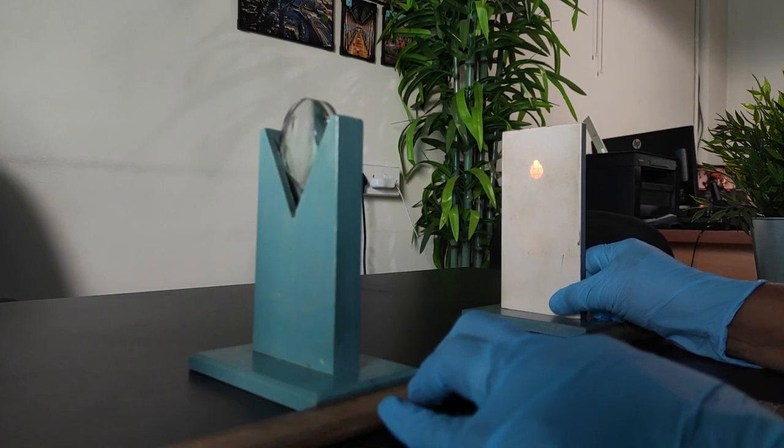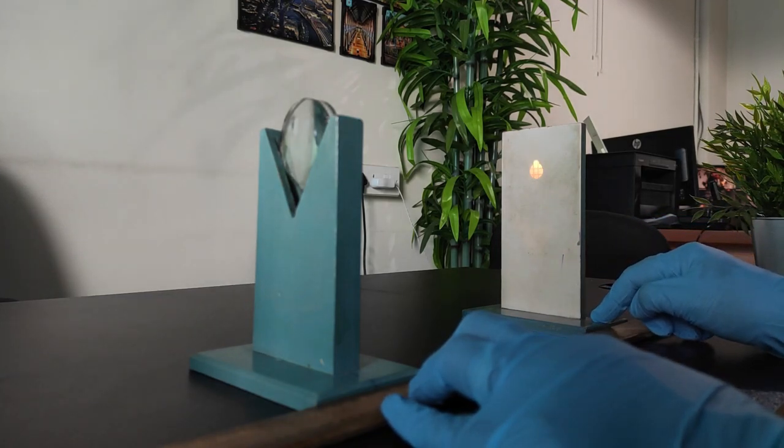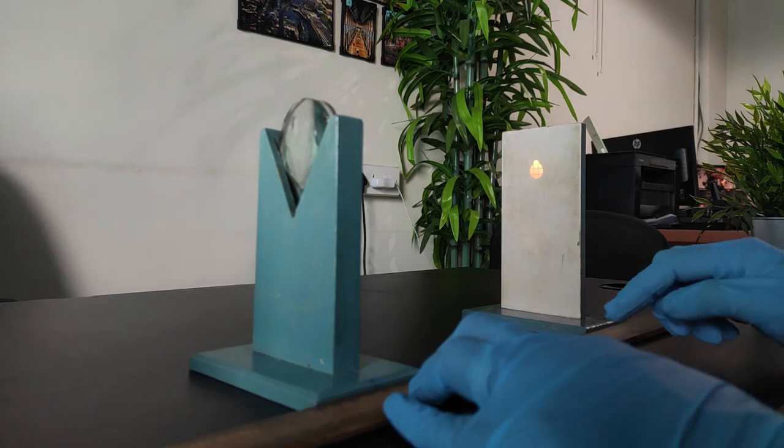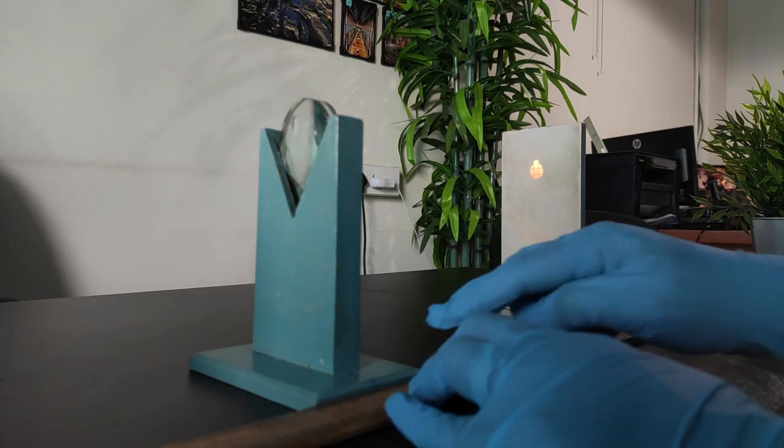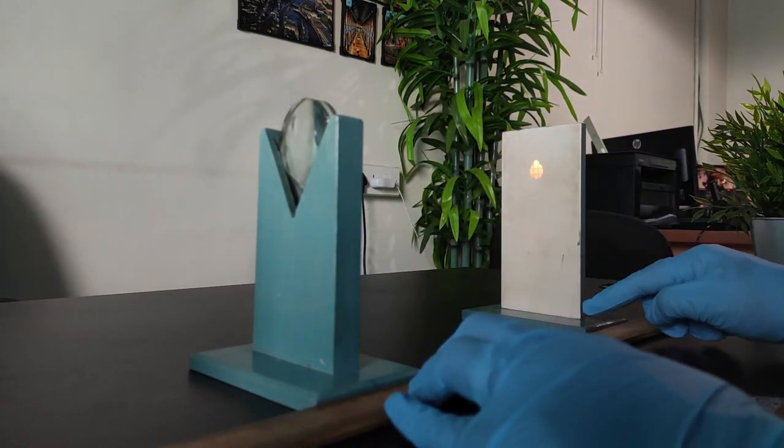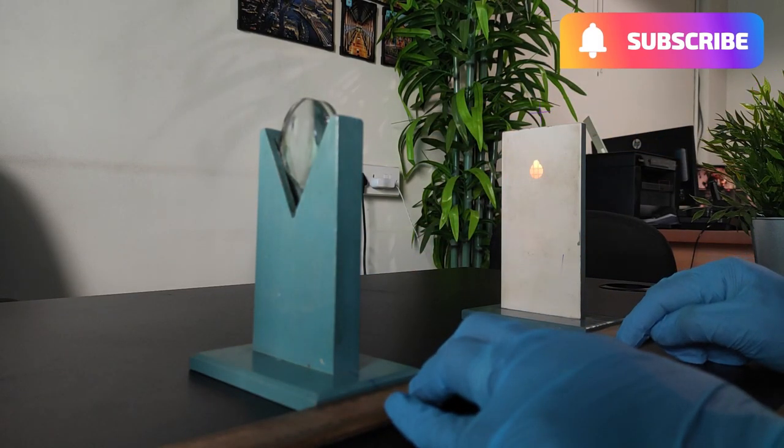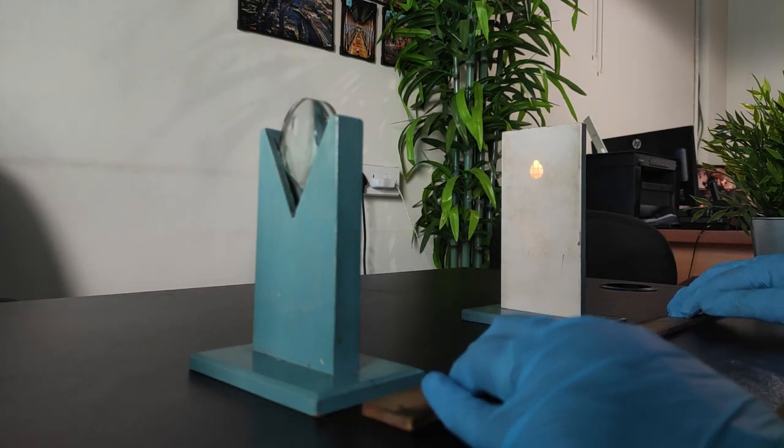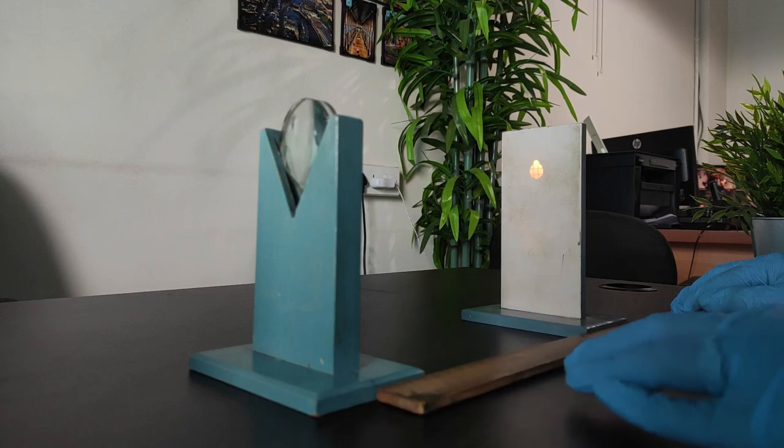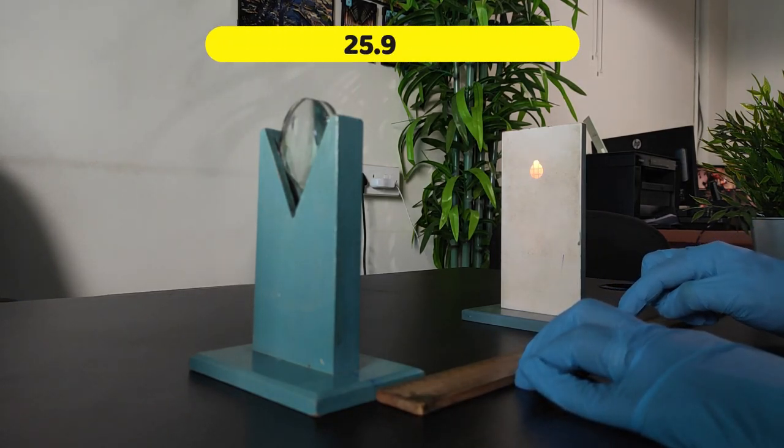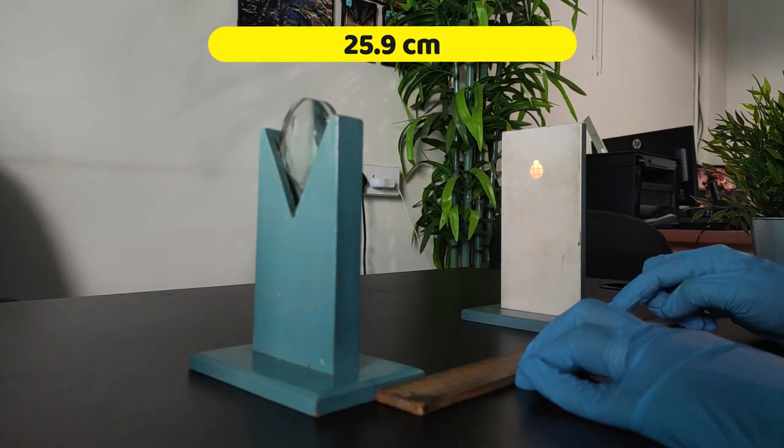Following that, we have to measure the distance between the lens stand and the screen. We can measure V with the help of a scale. The distance between the lens stand and the screen is given by V. We can calculate the V. The length of the V is 25.9 cm.